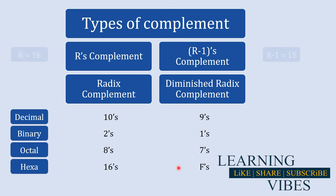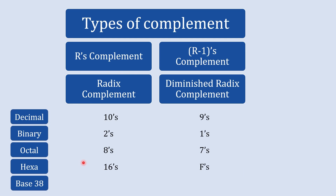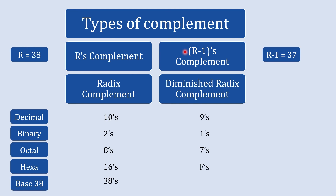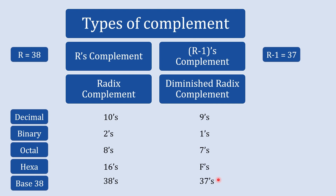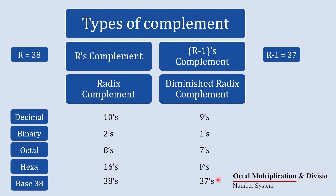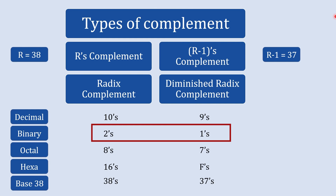For any number system — for example one with base 38 — r's complement would be 38's complement and r-1's complement would be 37's complement. The use of r's complement and r-1's complement has reduced in practical systems due to their limitations. However, 2's complement representation has largely replaced these methods in modern computer systems due to its simplicity, single representation for zero, and avoidance of dual zero representation issues.